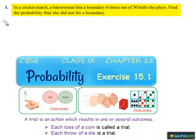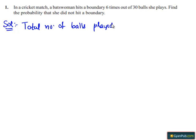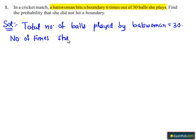Moving on to the solution. A batswoman hits a boundary 6 times out of 30 balls she plays. We have to find the probability that she did not hit a boundary. Let us write the given data. Total number of balls played by batswoman equals 30. Number of times she hits the boundary equals 6.